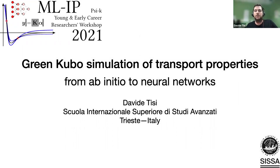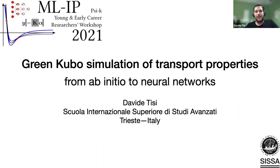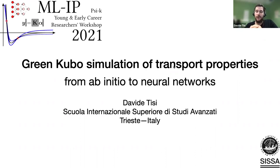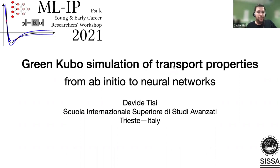Welcome. My talk is about the Green-Kubo simulation of transport properties of materials from ab initio and neural networks. Mainly I will talk about thermal transport properties. One thing that will come up—already introduced—is the problem that atomic energies are not well defined and different models define different neural networks. I will explain how to solve this problem in thermal transport calculations, and the tutorial will cover how to implement this equation with neural networks and how to obtain reliable data analysis.